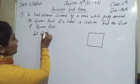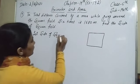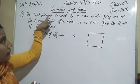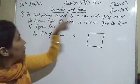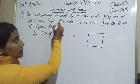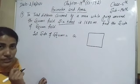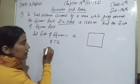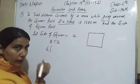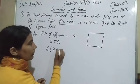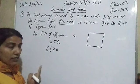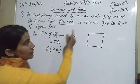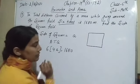Let side of square equal to a. The total distance covered by a man while going around the square field six times means six times the perimeter of the square. The perimeter of the square is 4a (since side is a). So according to the question, six times the perimeter equals 1680 meters: 6 × 4a = 1680.